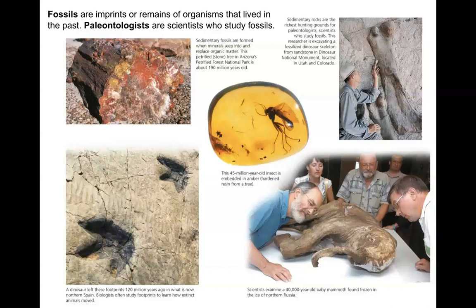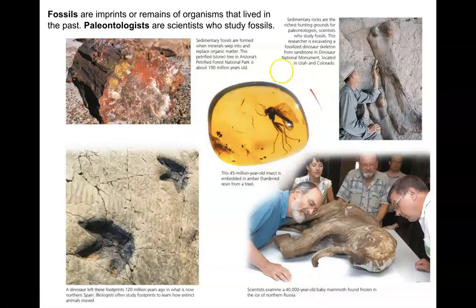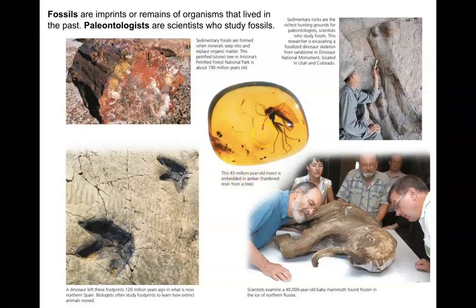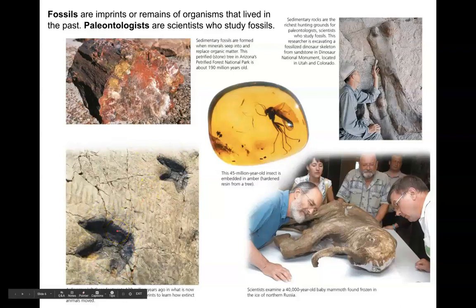Not all fossils have to be physical remains. Here I can see an entire insect embedded in amber — the amber hardened and protected it from the elements over 45 million years, keeping that organism intact. Another kind of fossil is imprints — think of a footprint or a burrow. The organism itself is long gone, but these marks remain after many years, signifying that organism was there.